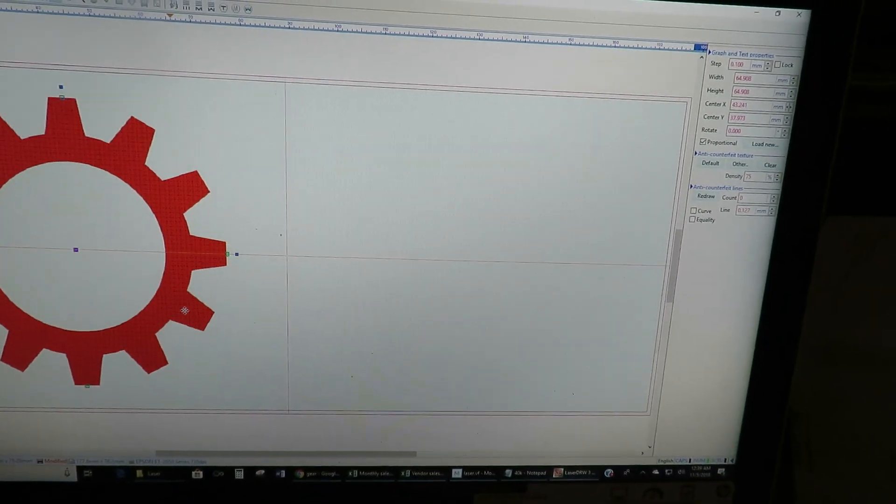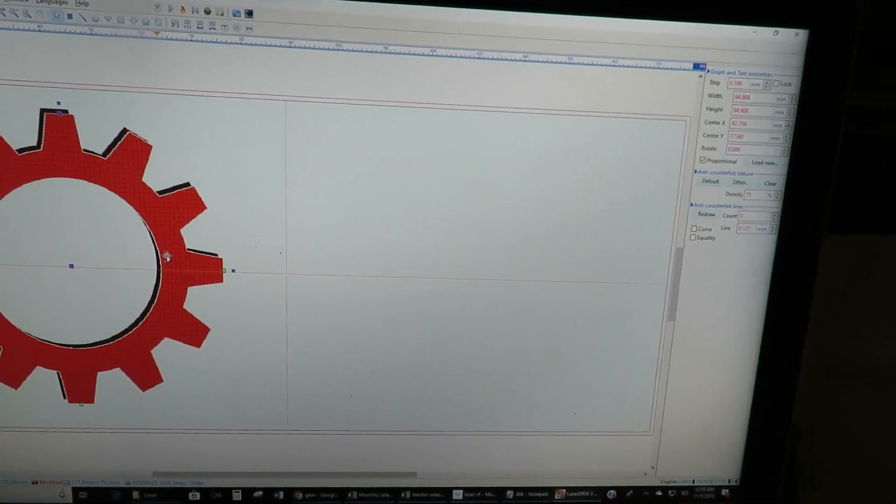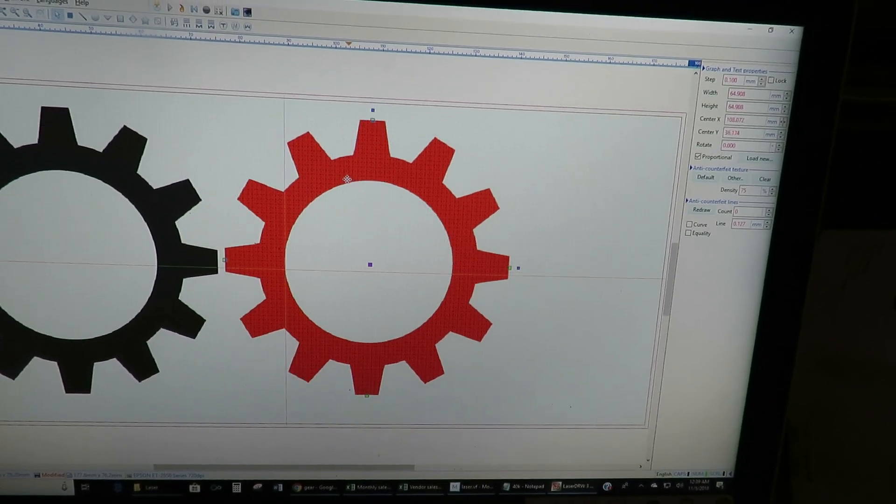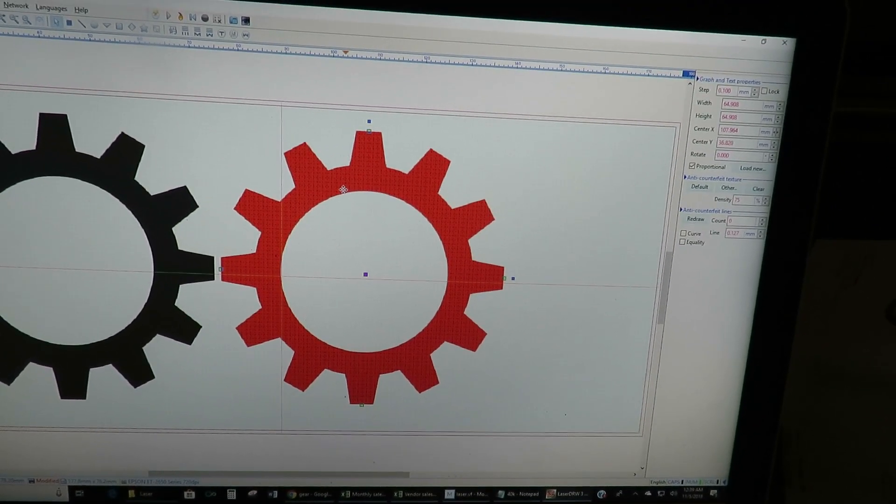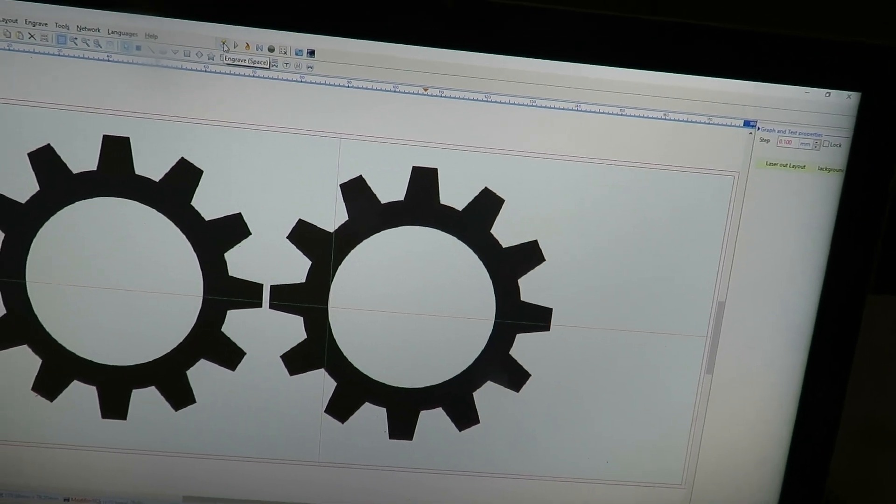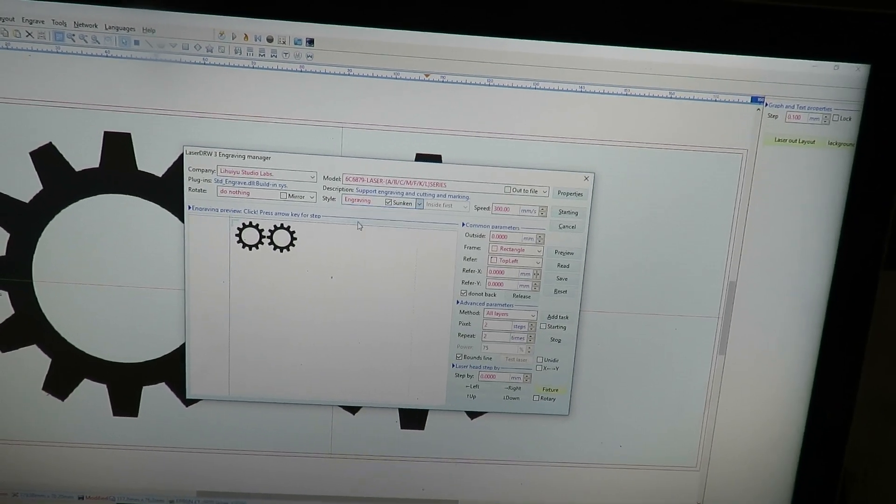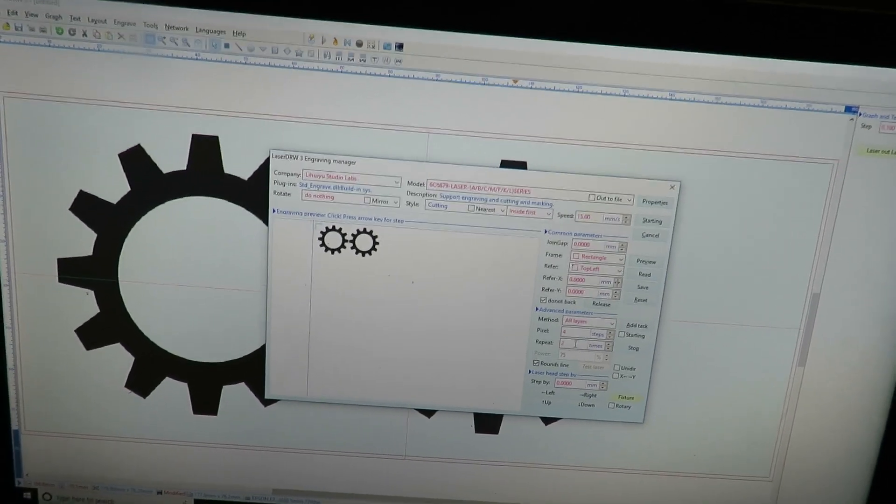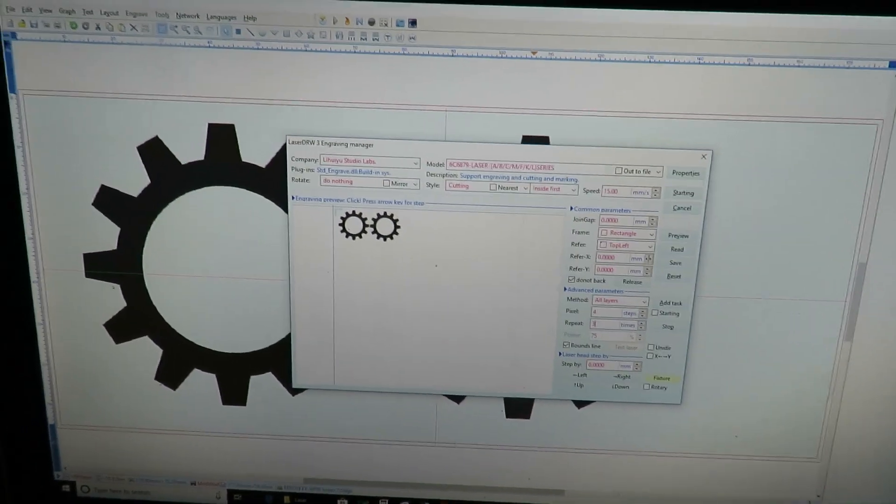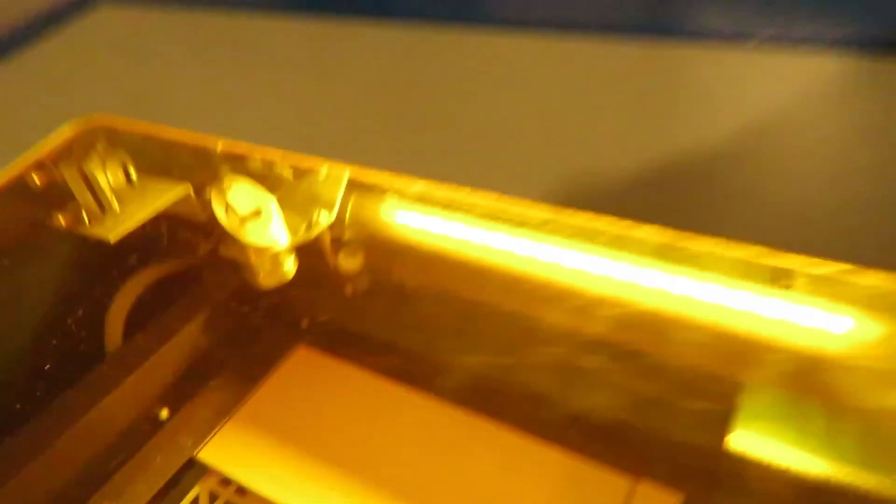I'm going to do two. So edit, copy, edit, paste, and then put them together just like that. And of course, engrave. Make sure it's cutting. I'm going to try two because it's pretty thin, but let me go ahead and do three. Let's give it a try.